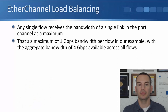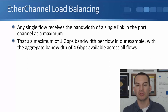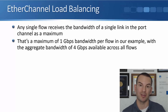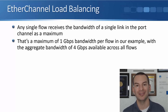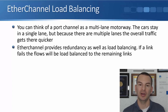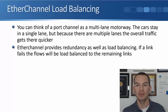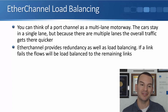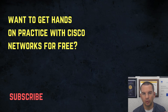Because a single flow always gets load balanced onto the same interface, any single flow receives the bandwidth of a single link as its maximum — one gigabit per second in this example — but there is an aggregate bandwidth of four gigabits across all flows. Think of a port channel like a multi-lane motorway: cars stay in their own lane, but multiple lanes allow overall traffic to move faster. EtherChannel also provides redundancy; if a link fails, flows are load balanced to the remaining links.